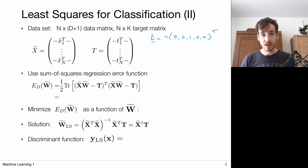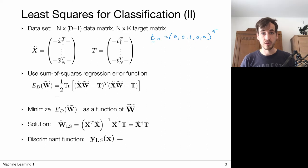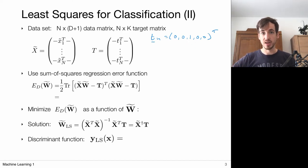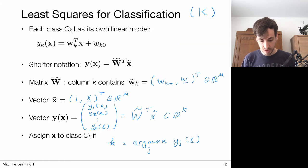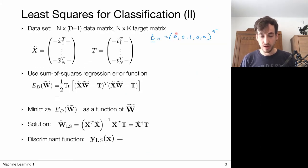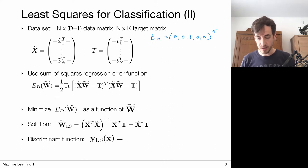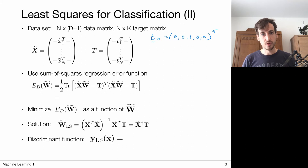This is where the regression problem becomes a bit odd, because I'm trying to predict zeros and ones, whereas my regression models return values anywhere on the real axis — they could be negative or very large. What I want is for each Y_k to return a value close to zero when not in the class and close to one when in the class. That's how we're going to format the data.